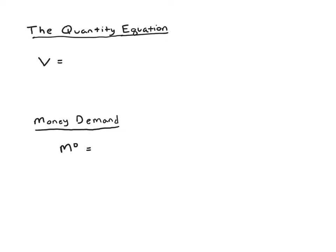Welcome to this rapid review on the velocity of money and money demand equations. We'll start off by reviewing the definition of the velocity of money. So V, the velocity of money, is defined as the average number of times a dollar in the money supply is used per time period.